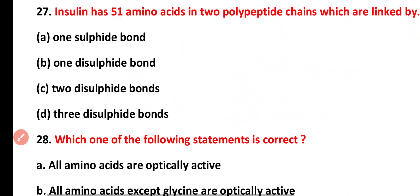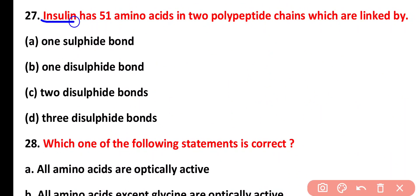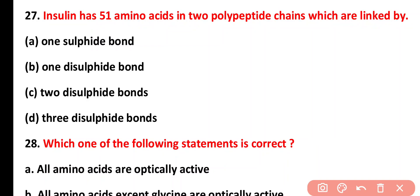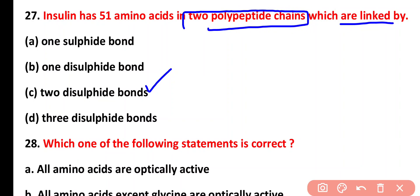Question twenty-seven: insulin has fifty-one amino acids in two polypeptide chains, which are linked by how many disulfide bonds? Options: one sulfide bond, one disulfide bond, two disulfide bonds, three disulfide bonds. The correct answer is option C. The two polypeptide chains (alpha and beta) of insulin are linked by two disulfide bonds, and there is also one disulfide bond within the alpha chain.